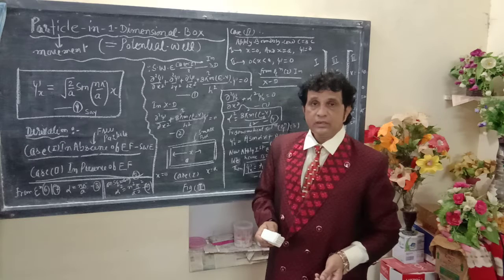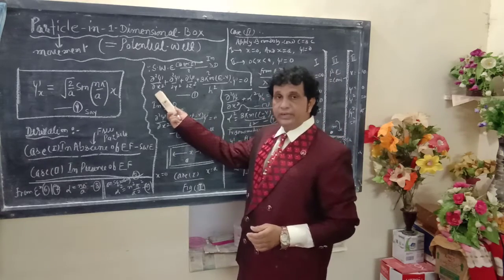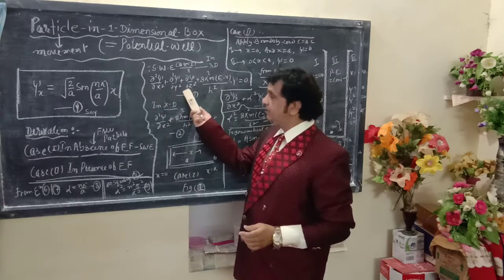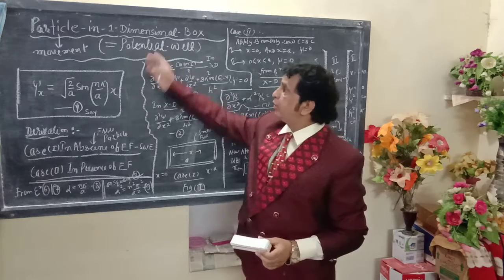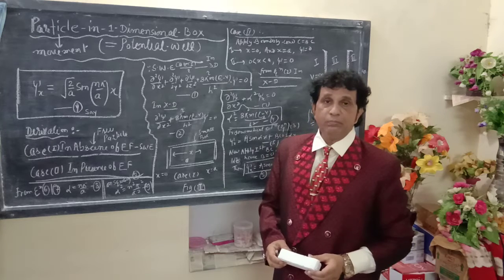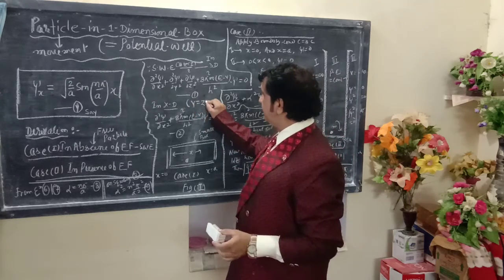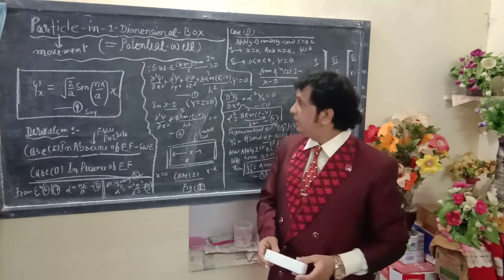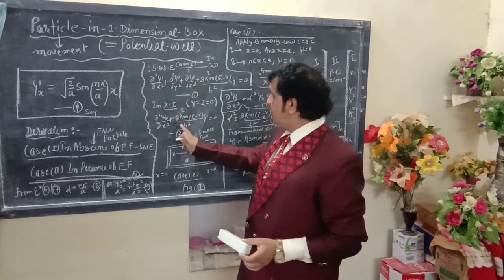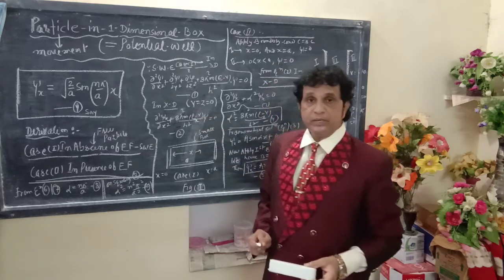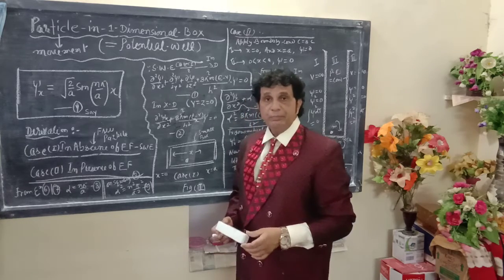Once again, the Schrödinger wave equation in all three dimensions is: δ²ψ/δx² + δ²ψ/δy² + δ²ψ/δz² + (8π²m/h²)(E − V)ψ = 0. According to our title, we apply it in one dimension only (x-direction), so the y and z direction terms become zero. The equation then takes the form: δ²ψ/δx² + (8π²m/h²)(E − V)ψ = 0, which we call Equation 2.